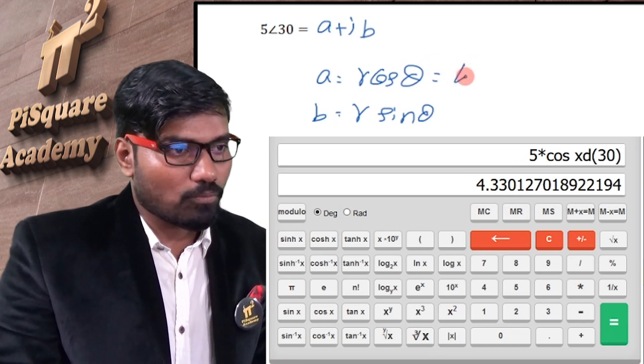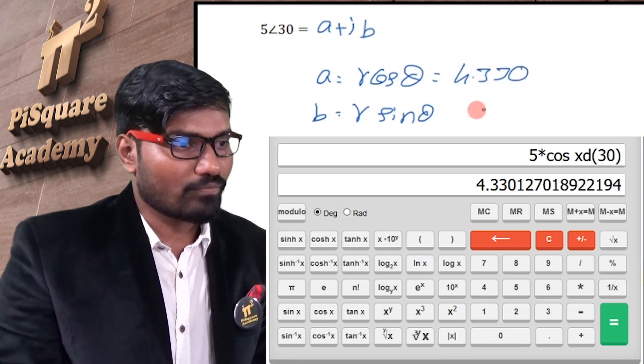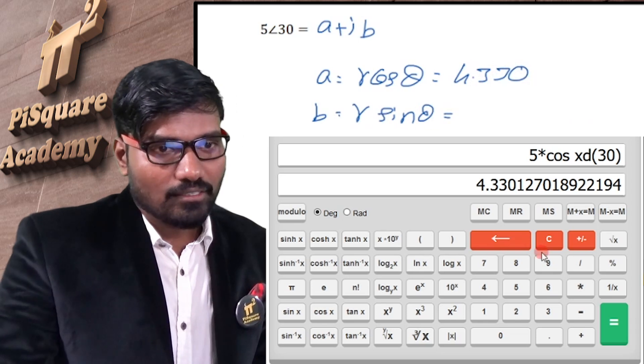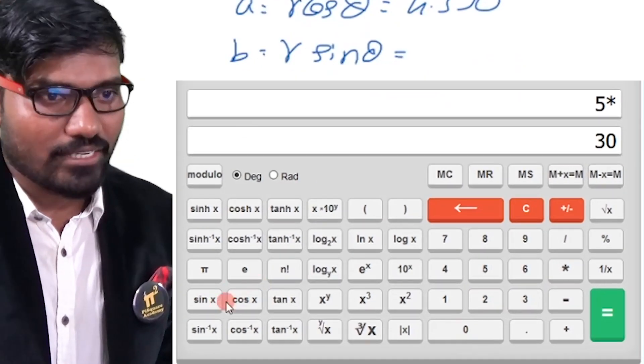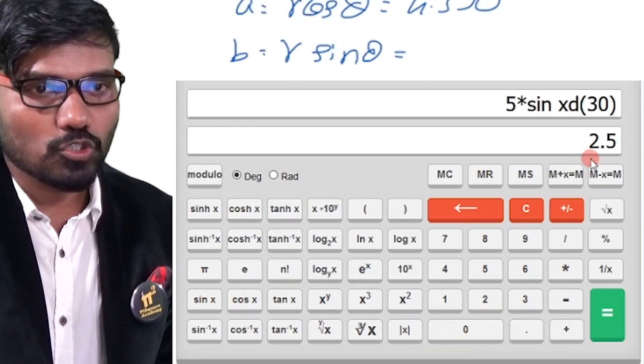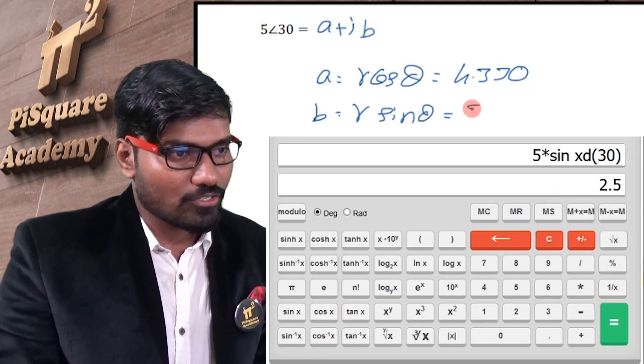So a value is 4.330. What is the value of b? Clear it. 5 into theta is 30 degrees and sine, so answer is 2.4. So this value is 2.5.